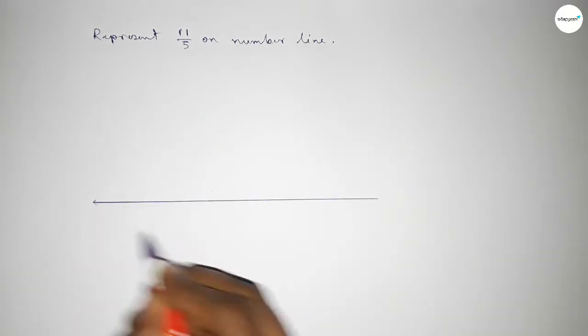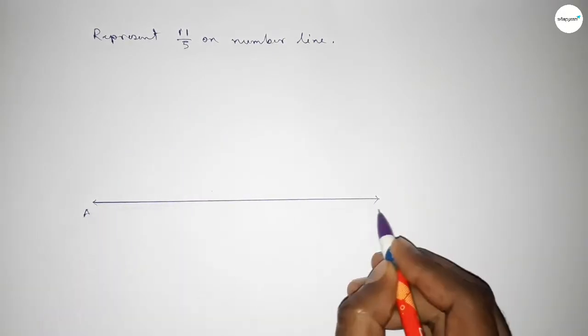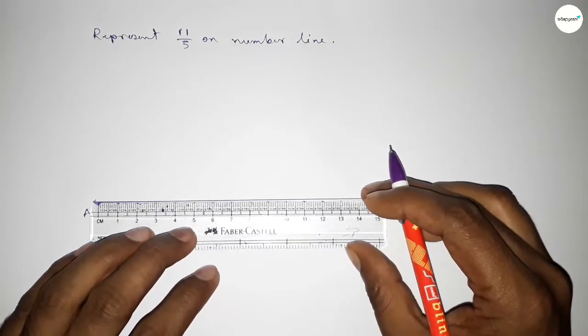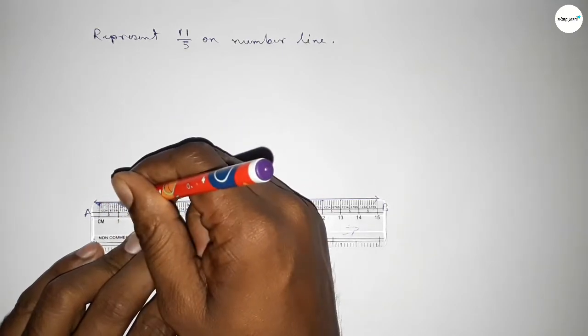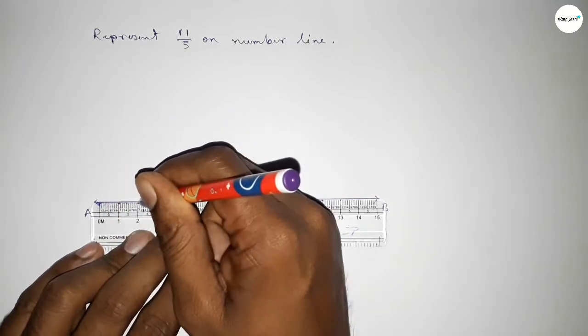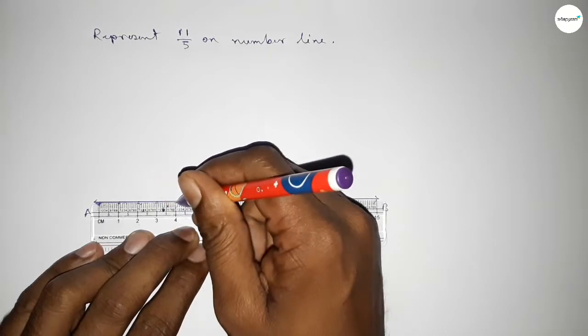First drawing here a line and taking arrow mark on both sides. So this is a number line. Next we have to mark the numbers on the line by using scale.